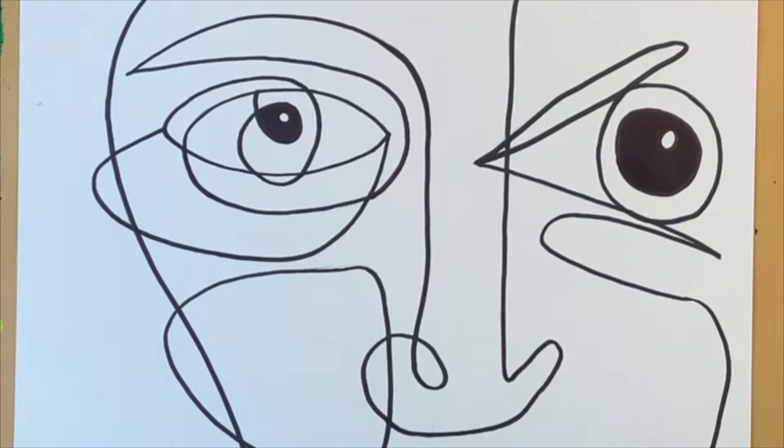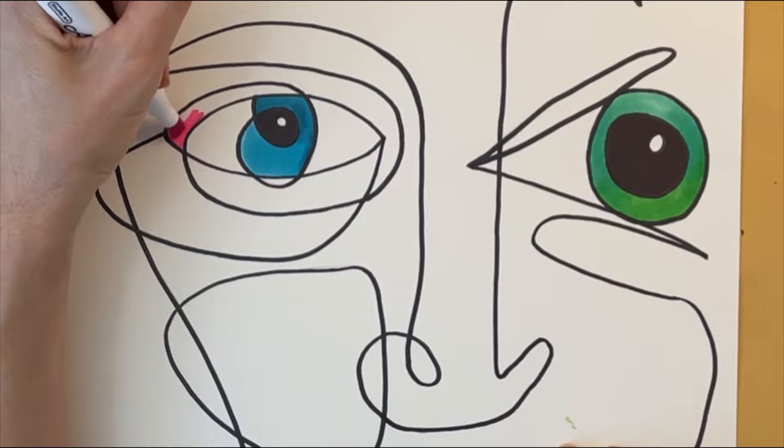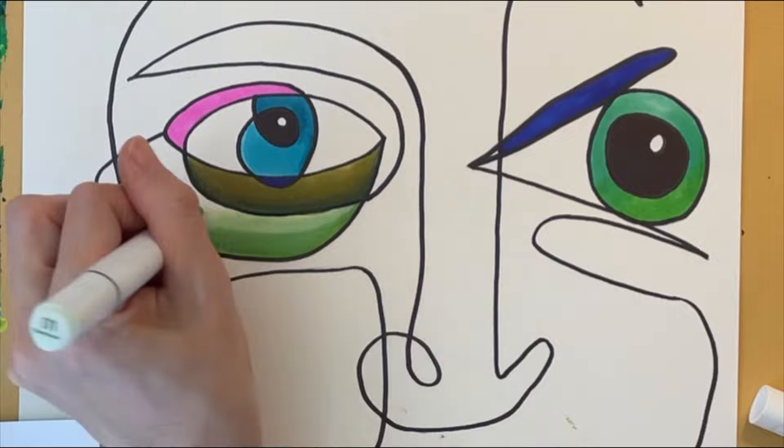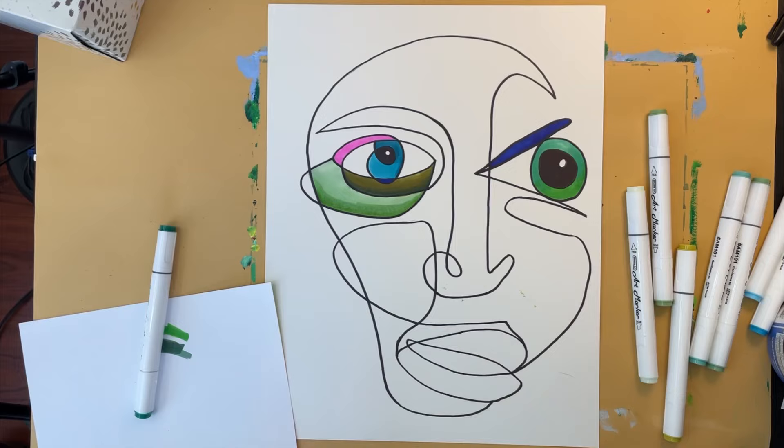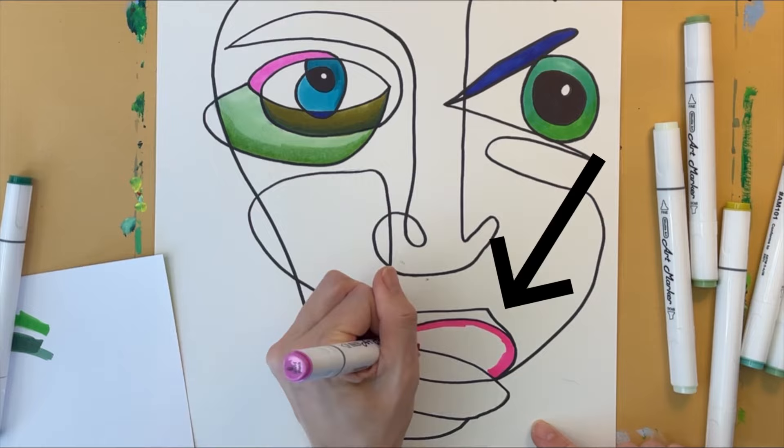I'm using markers to fill in the teeny tiny more detailed areas of my drawing. See how I'm using dark green here on the bottom then blending it into a lighter green. In this way I'm using two different colors to color in one facet. A note to my students: if you have any areas that are bigger than this area right here that I'm coloring in, please wait and use paint to fill it in.